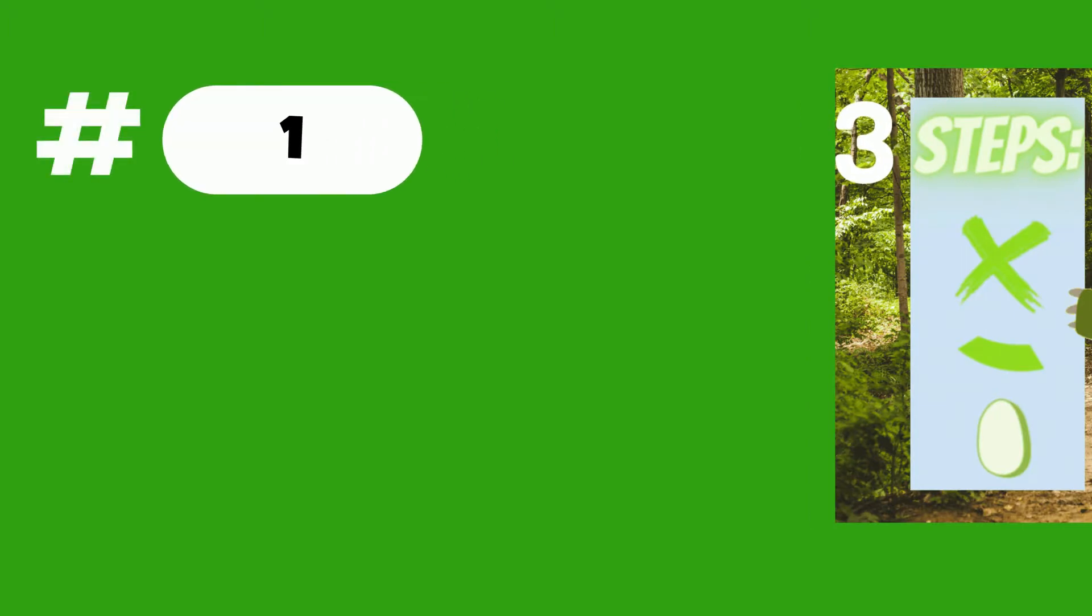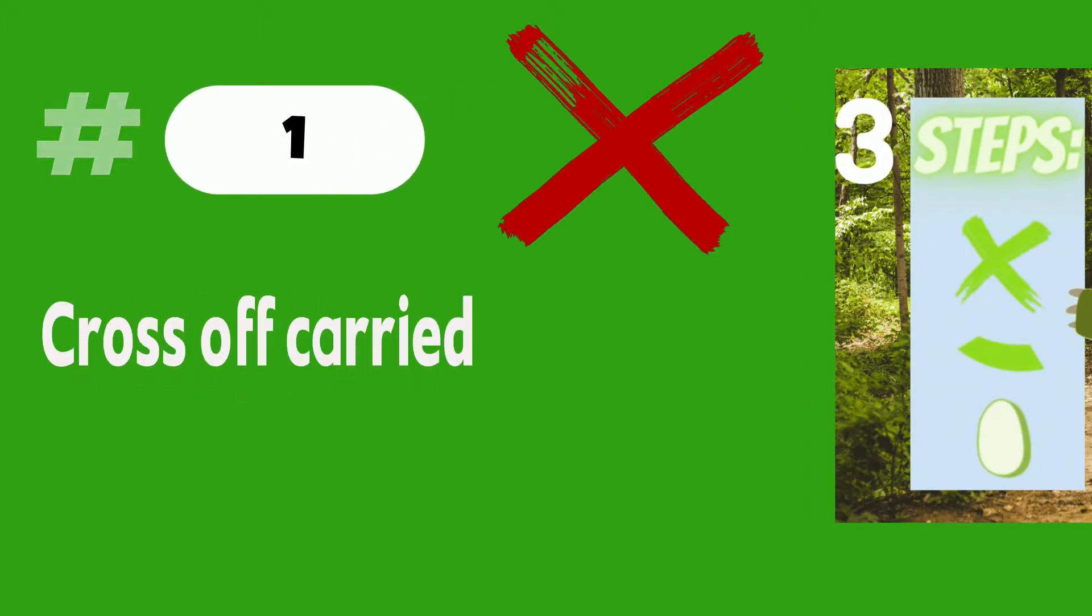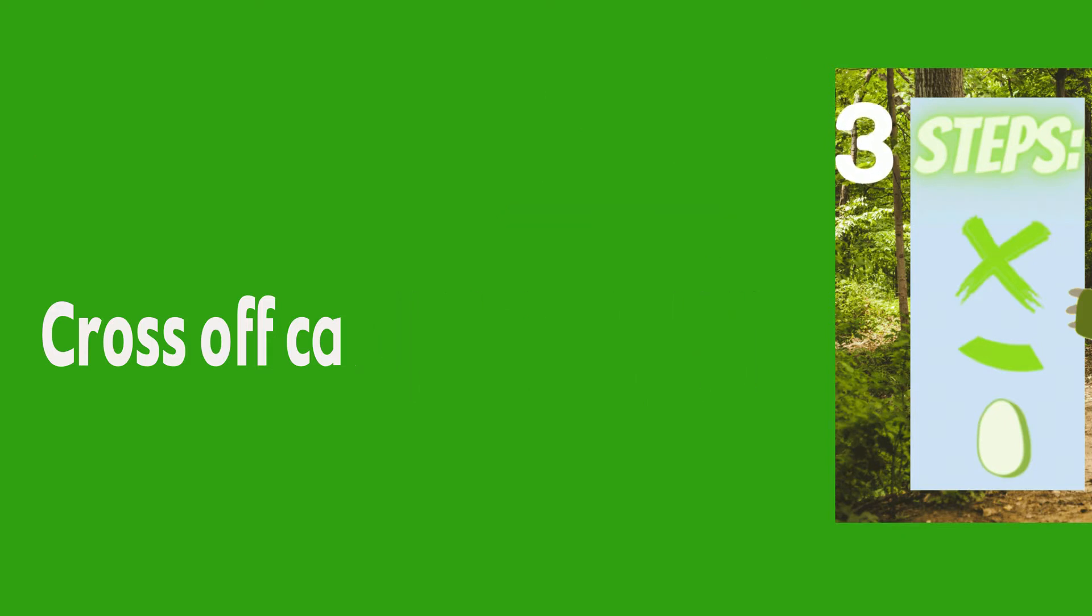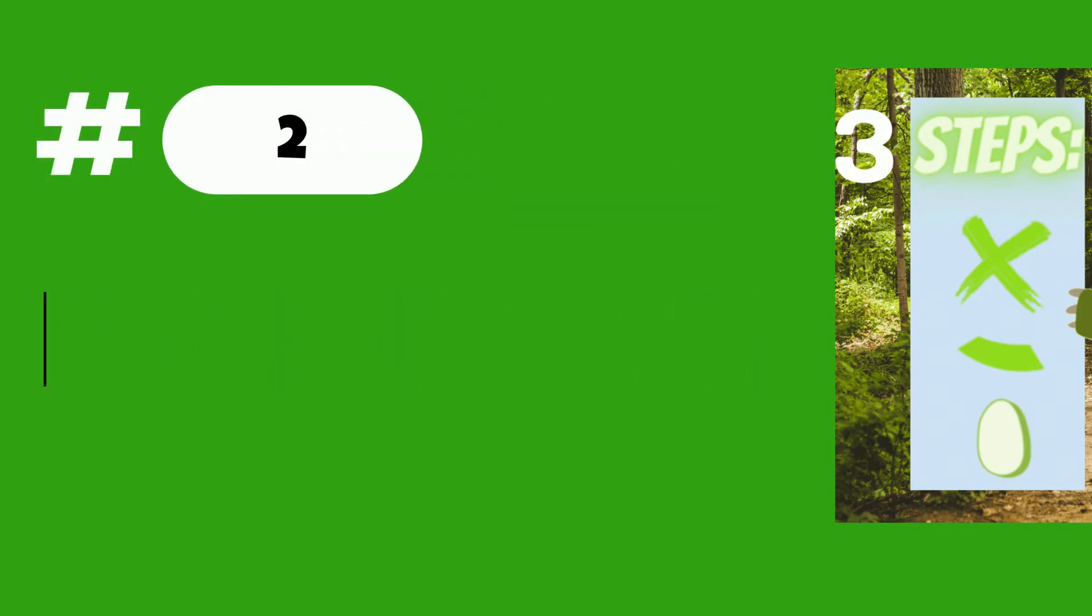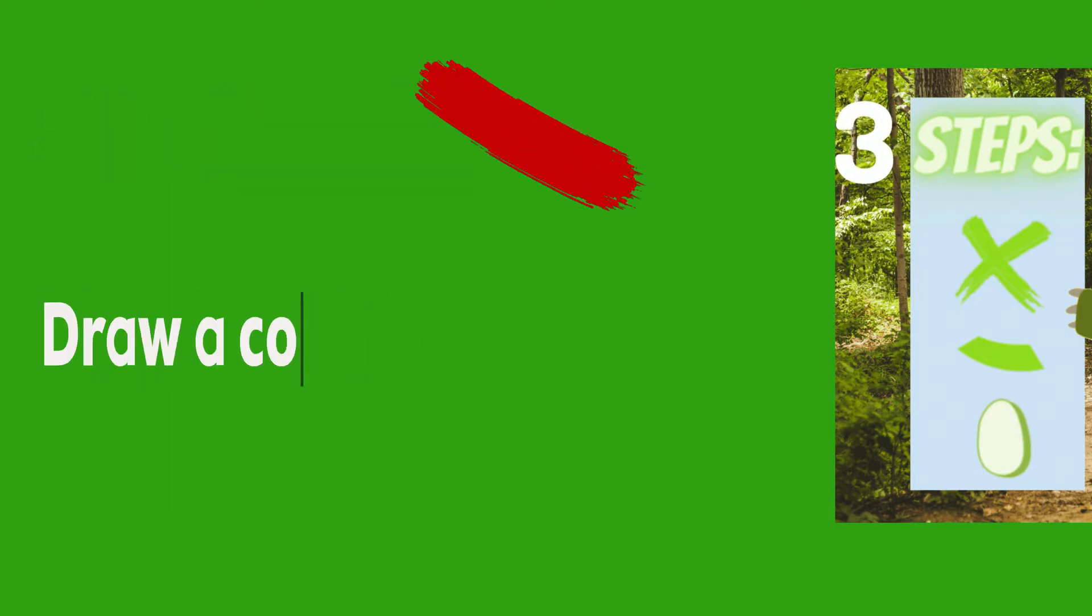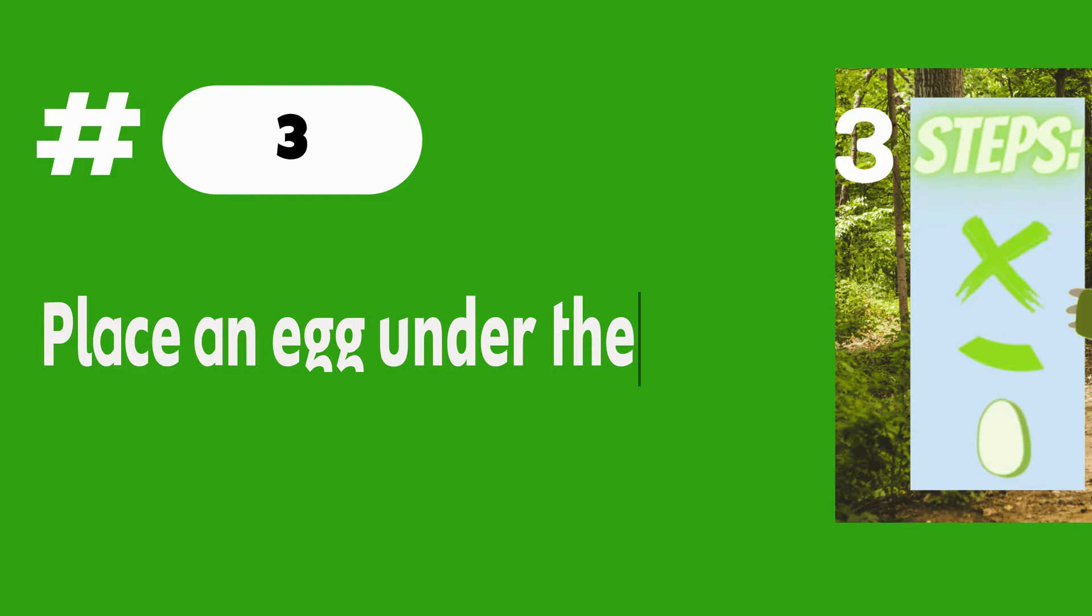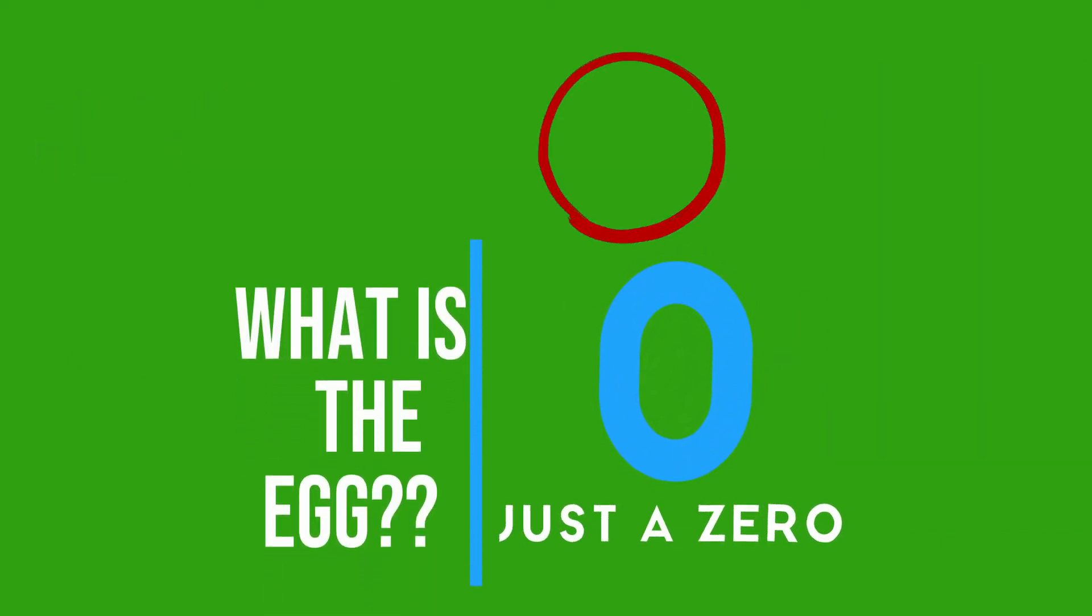Step 1: Cross off carried numbers. Step 2: Draw a collar. Step 3, the most important step: Place an egg under the collar. An egg is just a zero.